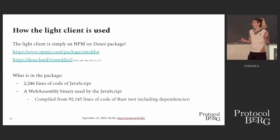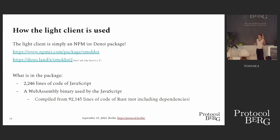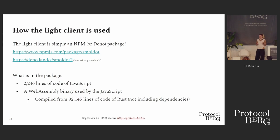The light client is just an NPM or Deno package. It works in the browser, on Node.js, on Deno — it works everywhere. Of course the main use case is the browser, but we made it work everywhere. In this package you have a bit of JavaScript — only 2,000 lines of code — and 92,000 lines of Rust compiled to WebAssembly. That's the actual light client in Rust.